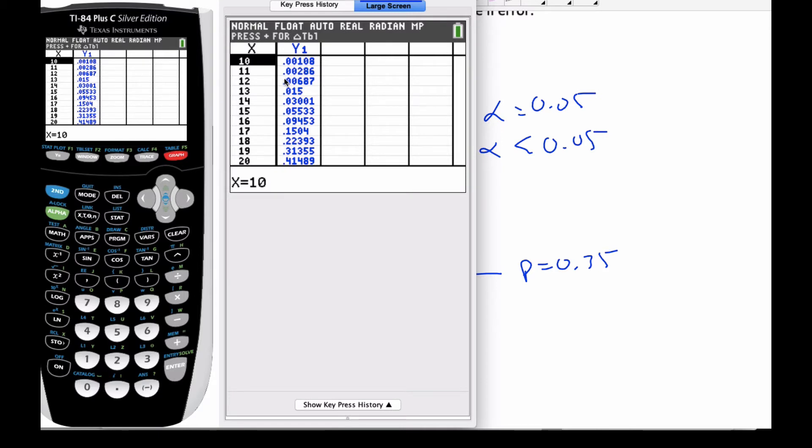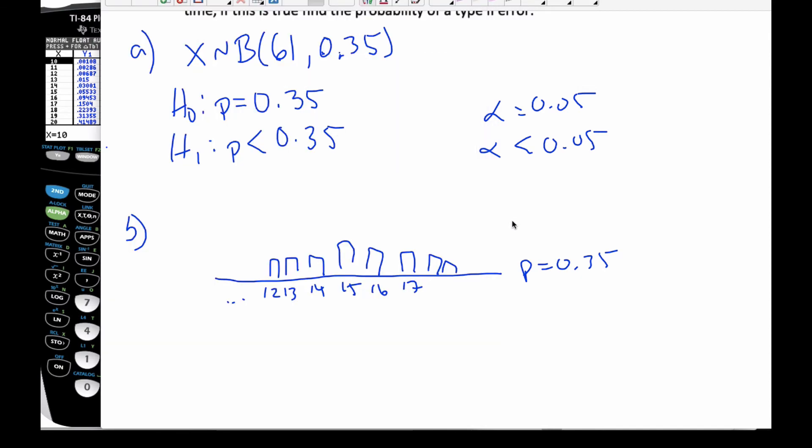I know when I'm at 13, I'm at 0.3, or 0.015, 14, 0.03. When I hit 15, it goes to 0.055. So, I know that my, what's happening is here, this is going to be my critical region. So, if this value is less than 14, then I will reject the null hypothesis.